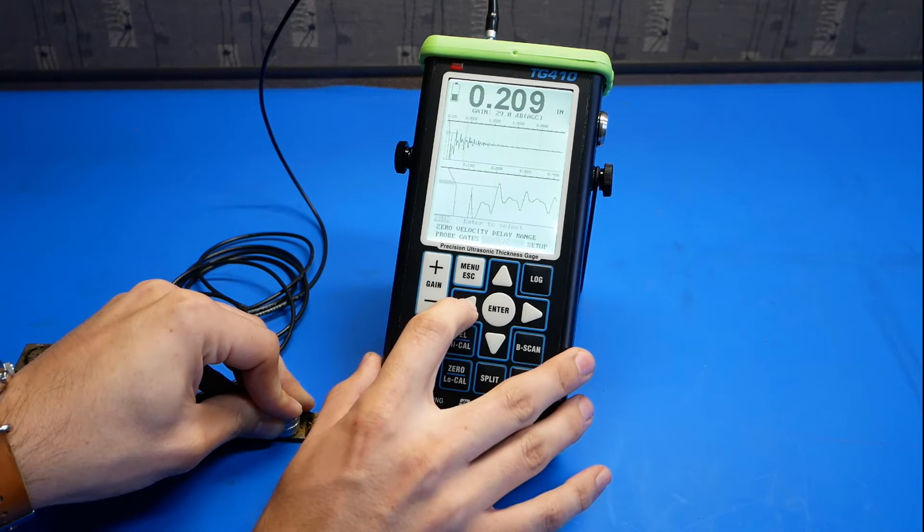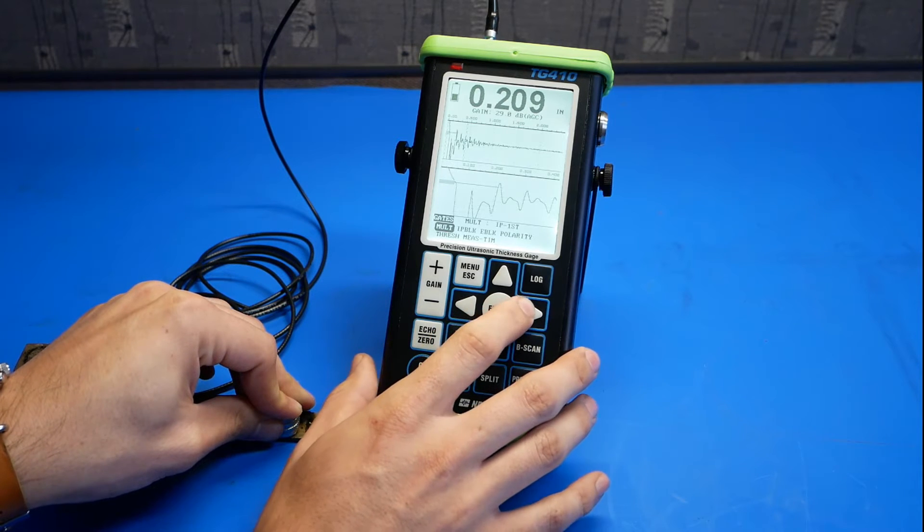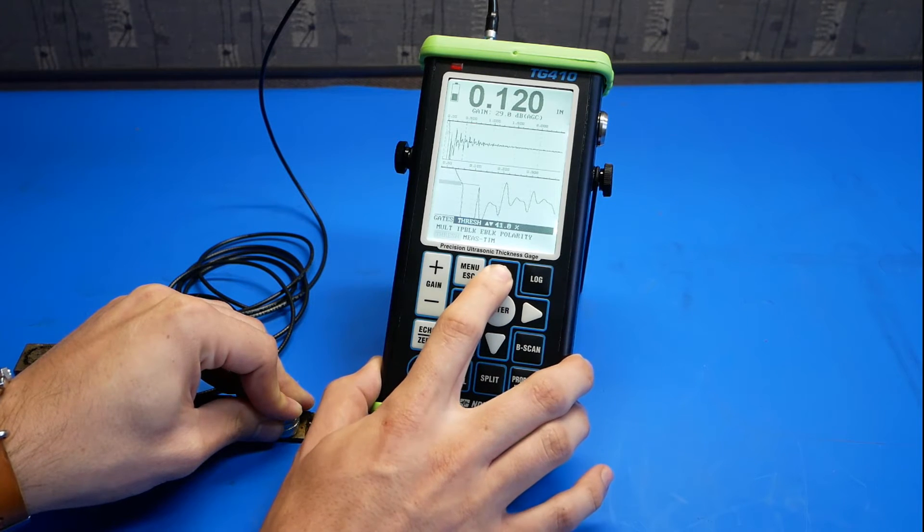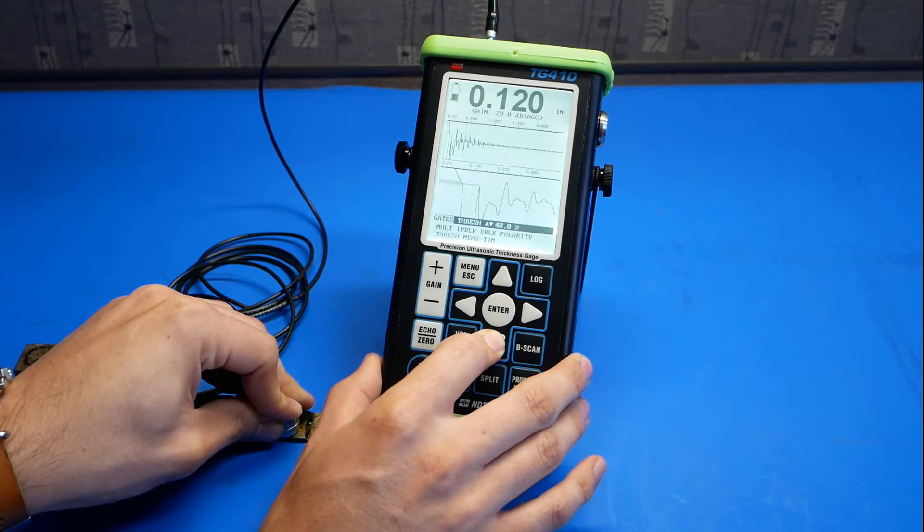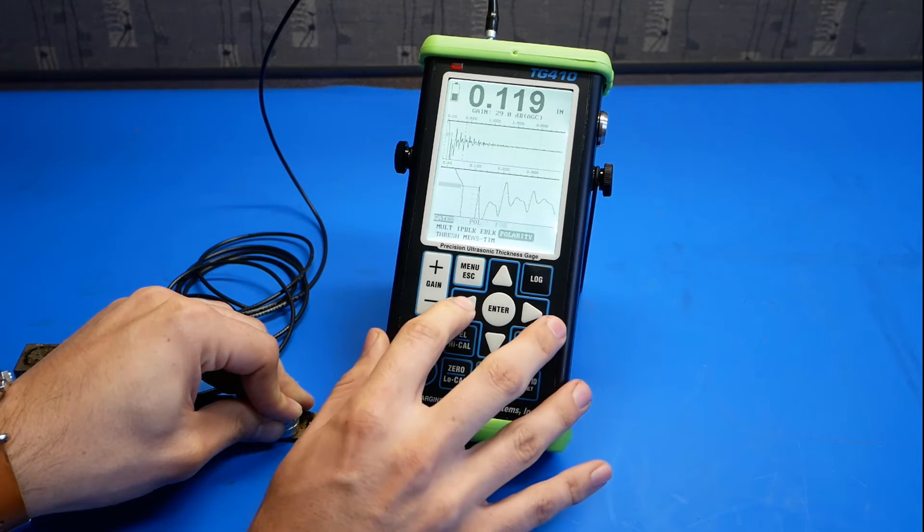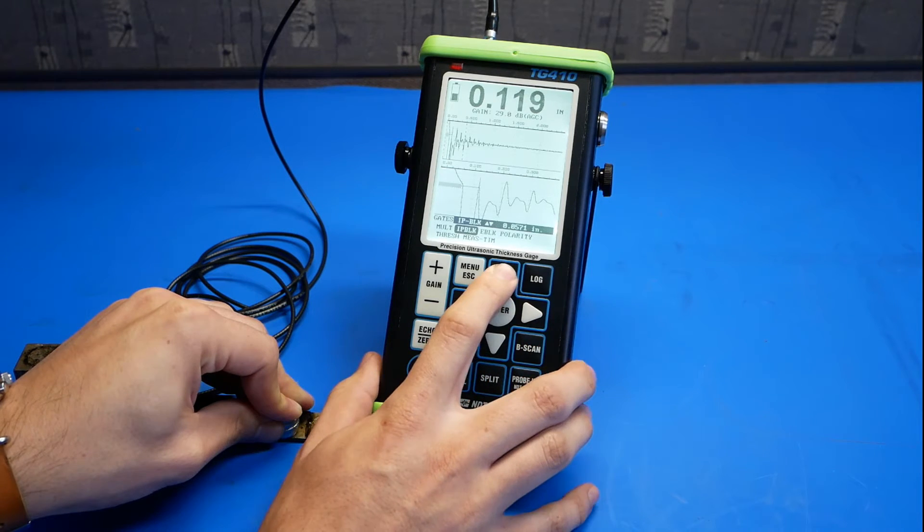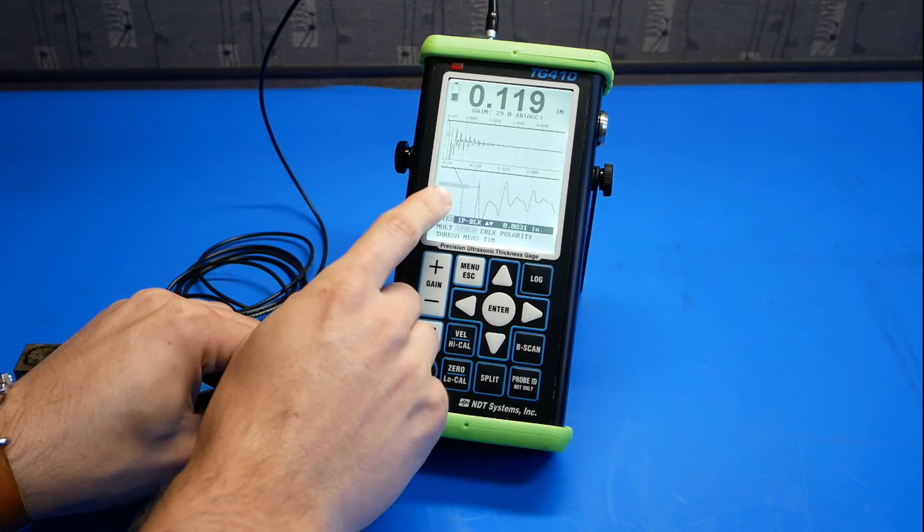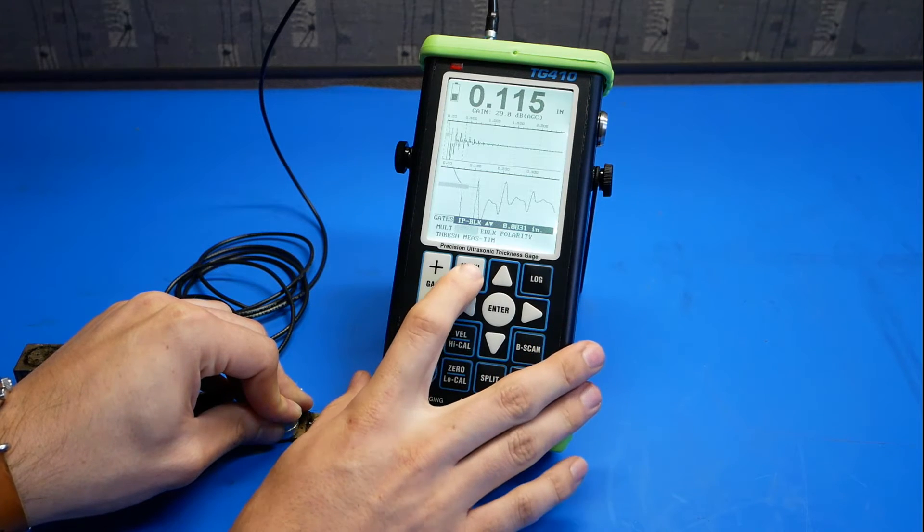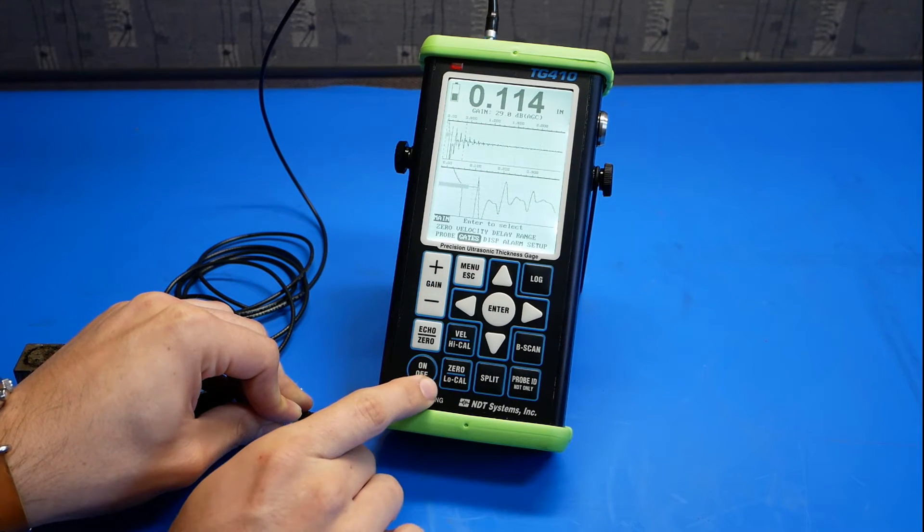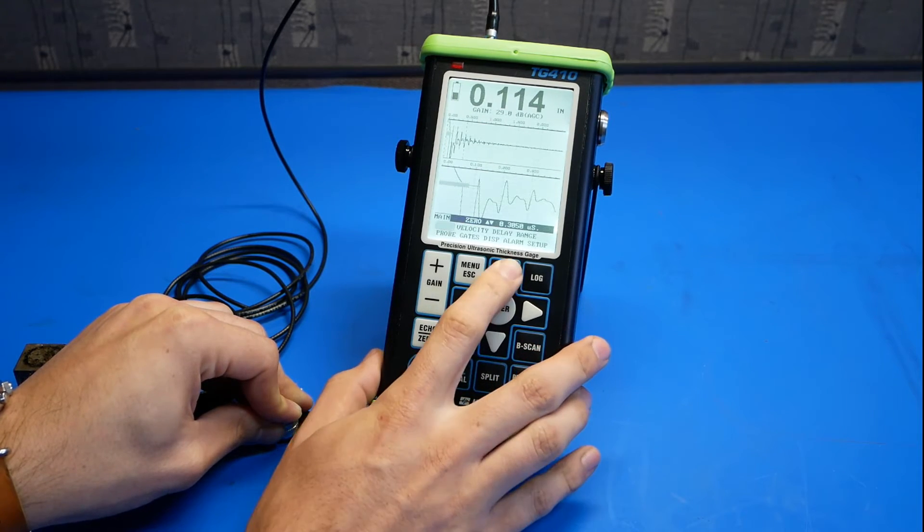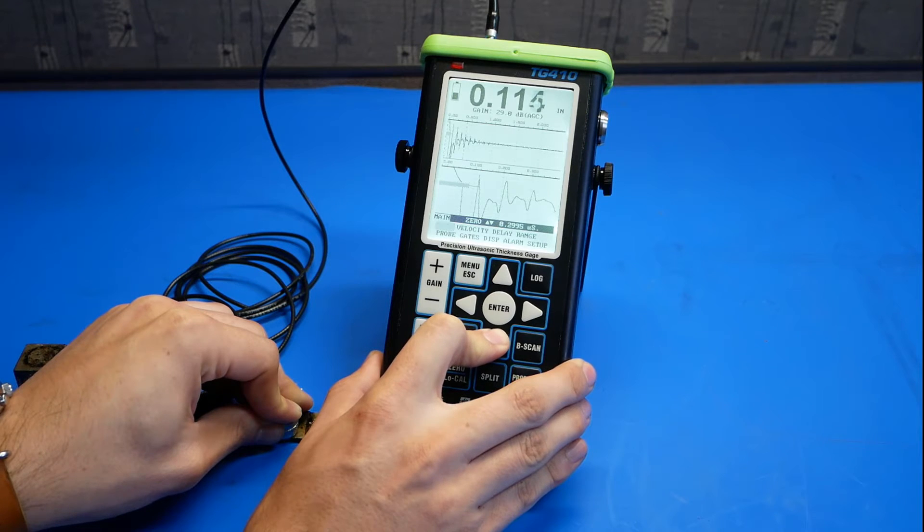We'll go to gates. We'll go to threshold, decrease that to 35 or 30%. Go to IP block and pull that out so that the gate passes over the initial pulse here. Next, go to your zero low cal to calibrate the low thickness. Adjust the zero so that our reading measures 0.1 inch.